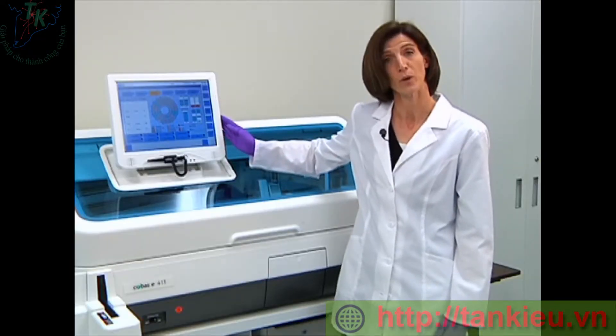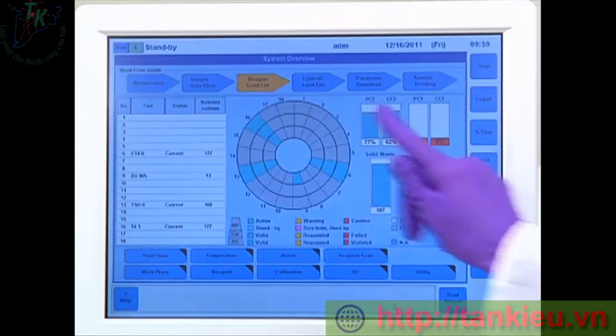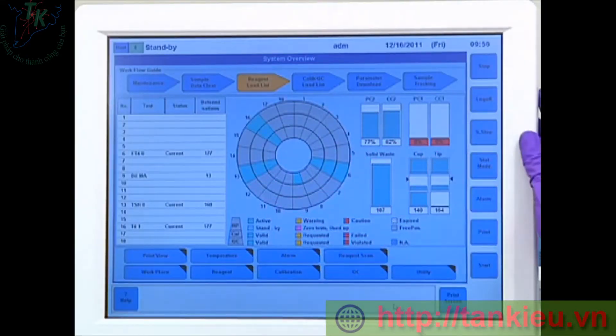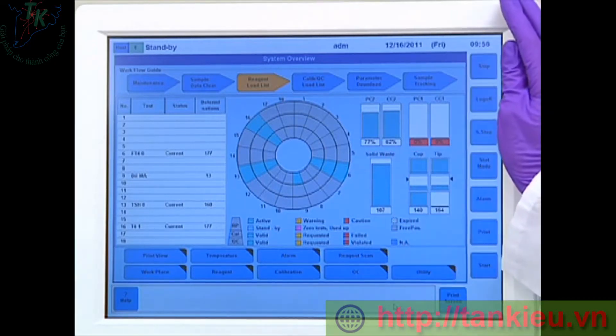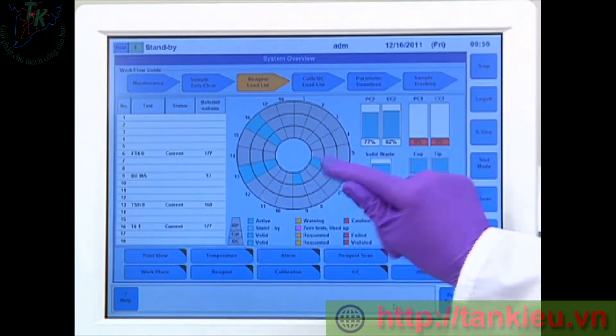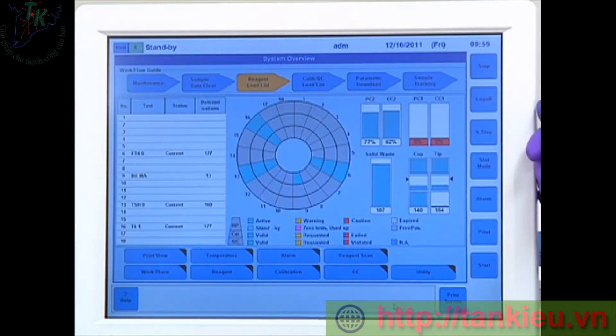The software uses color to direct our attention to the different areas that need to be attended to. First, what we're going to do is take a look at our reagent inventory. If we look in the center of the screen, we're going to see an image of the reagent compartment. If I had a reagent that was empty, I would be able to see red on the screen. If I had a reagent whose lot had expired, I would see cross-hatches throughout the wedge.